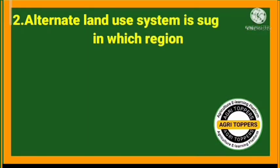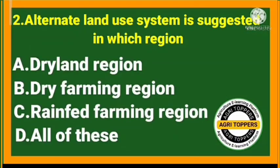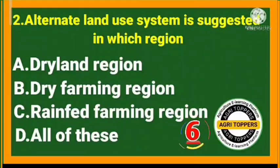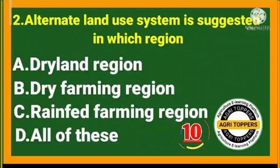Second question: alternate land use system is suggested in which region? The answer is dry farming region.